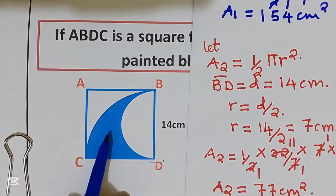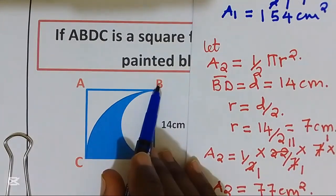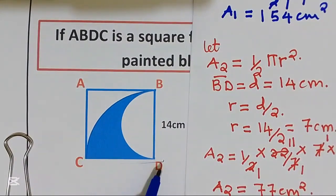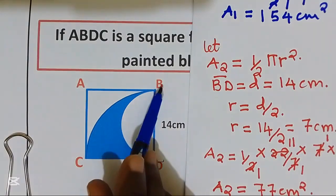To get the area painted blue, we are going to take the area of our quarter circle B, C, D, take away the area of the semi-circle B, D.